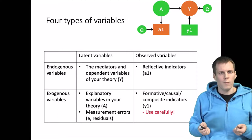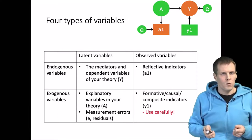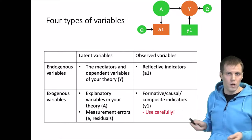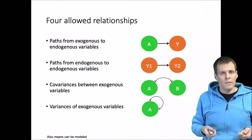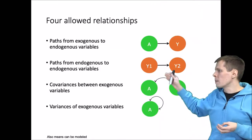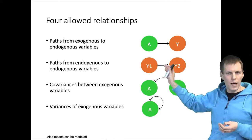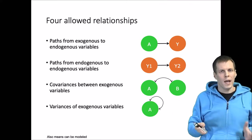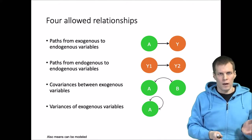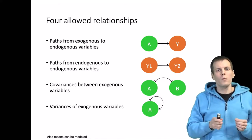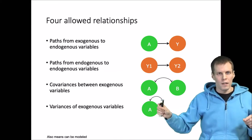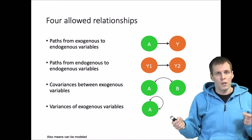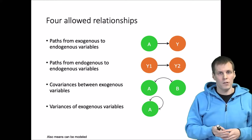The basic configurations are: we have observed variables, latent variables, endogenous variables, and exogenous variables. Typically you should avoid having observed variables as exogenous predictors unless you really know what you're doing. Variables can have different configurations — a path from exogenous to endogenous variables, paths between endogenous variables, and correlations and variances within exogenous variables. We cannot have a path between two exogenous variables because when we draw a path from one variable to another, the target variable becomes endogenous by definition.